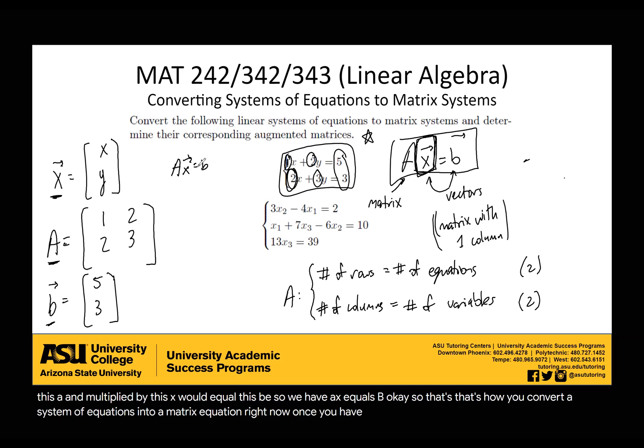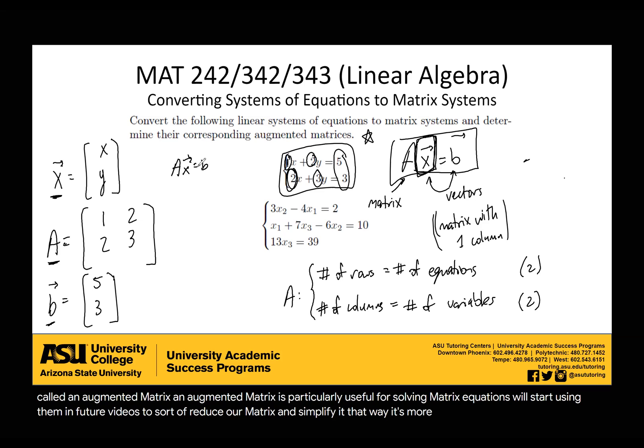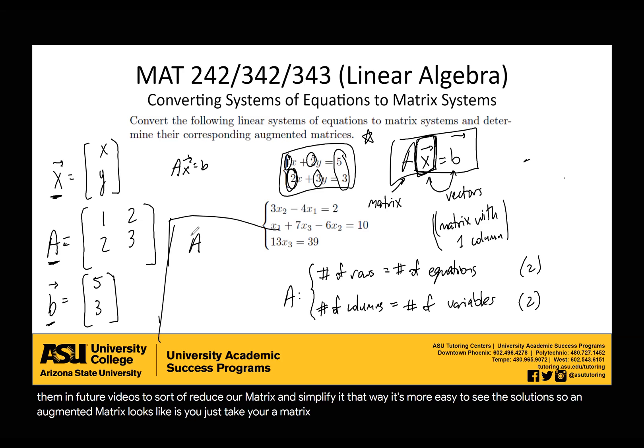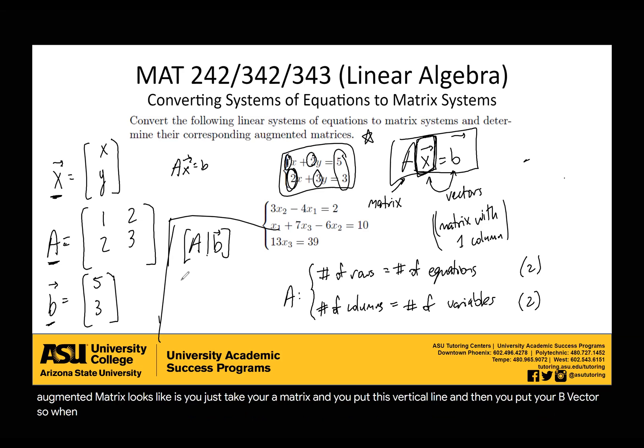Now, once you have your matrix equation, you can make something called an augmented matrix. An augmented matrix is particularly useful for solving matrix equations. We'll start using them in future videos to reduce our matrix and simplify it, making it easier to see the solutions. What an augmented matrix looks like is you just take your A matrix, put a vertical line, and then put your B vector. In our case, our augmented matrix would look like [1, 2 | 5; 2, 3 | 3]. This is our augmented matrix.